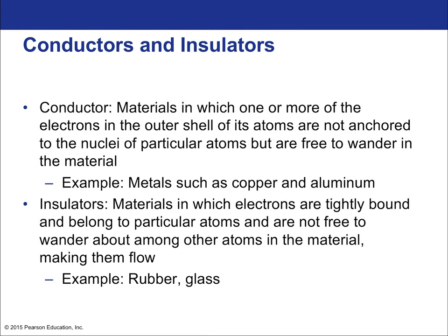Conductors are materials in which one or more electrons in the outer shell of atoms are free to wander around—metals have a sea of free electrons. In a conductor, individual atoms don't really polarize; instead, free electrons move macroscopic distances to one side of the metal. Insulators are materials in which electrons are tightly bound and belong to particular atoms and are not free to wander. Rubber and glass are examples of insulators.